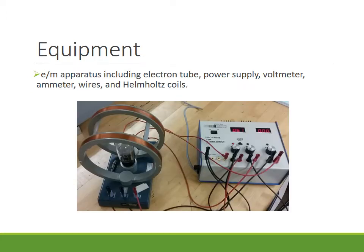The equipment is the E over M apparatus which shows an electron tube in between Helmholtz coils along with power supply beaters and wires.